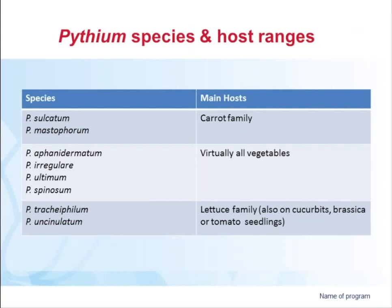In terms of host range — Pythium sulcatum and mastophorum are generally only in the carrot family. I've been working on parsley root rot disease and picked up Pythium mastophorum on carrots, and strangely enough on flannel flowers, which are also in the Apiaceae family. Virtually all vegetables are attacked by Pythium aphanidermatum — probably the most aggressive of all Pythium species, though it does have that high temperature requirement. Other species like irregulare, ultimum, and spinosum are found in lots of different veggies. In the lettuce family, Pythium tracheiphyllum has only really been found in WA and Victoria, and Pythium uncinulatum — the one that gets up into the leaves — both of those get up into the leaves of lettuces.